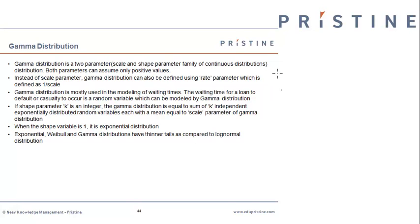Hi, this is Dinesh from Pristine. In the previous session, we had a look at Weibull distribution, which is a two-parameter distribution, the two parameters being the shape and scale.